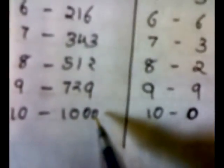In table number two, we write the units digit of all these cubes. For one, the units place is one. For two, it is eight. For three, the cube is 27 but the units place is seven. For four, the cube is 64 but the units place is four. For nine, the cube is 729 and the units place is nine. For ten, it will be zero.